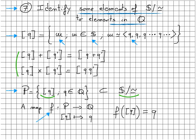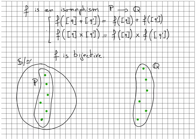I also define a function f from P to Q as defined here. We can verify that f is an isomorphism between P and Q. It means that it satisfies the two relations that are here that define f as a homomorphism. We also see that f is bijective and a bijective homomorphism is an isomorphism.